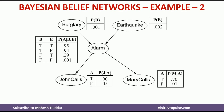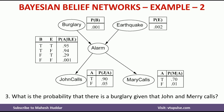In this video, I am going to discuss how to calculate the probability of happening of an event given some evidence — that is, what is the probability that there is a burglary given that John and Mary call. Here we want to find out the probability of a burglar in the home given that John and Mary have called. We don't know anything about alarm or earthquake, but we know John has called and Mary has called.